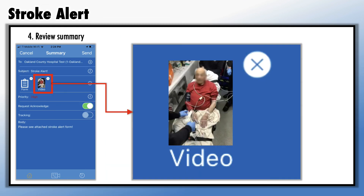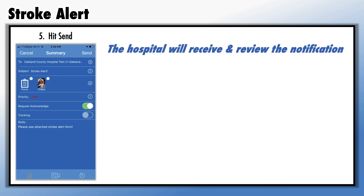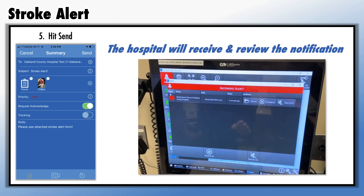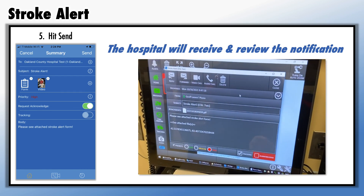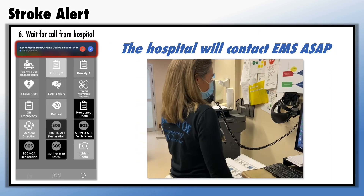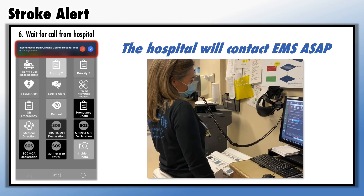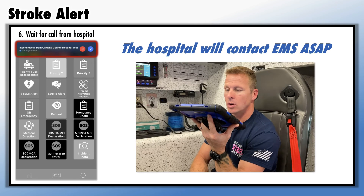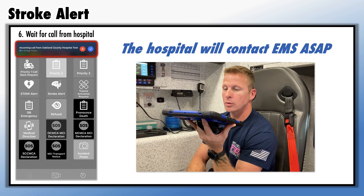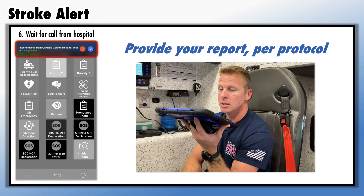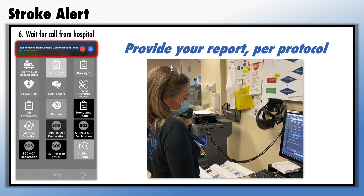After recording your stroke assessment, you'll notice that it is automatically attached to the notification. When you're ready, hit Send and wait for the hospital to call back via the eBridge application. The hospital will receive and review the notification form and any notes or attachments, then contact EMS via the eBridge application and take report. Hospitals are aware of the serious nature of strokes and will contact EMS at their earliest availability. Once communication is established, give your stroke report to the hospital per your local protocols and keep it clear and concise.